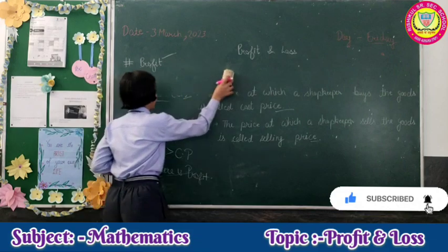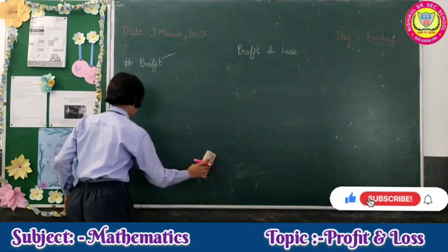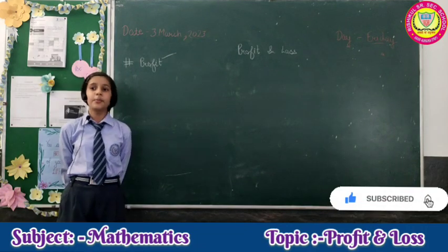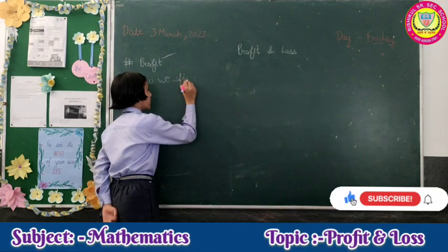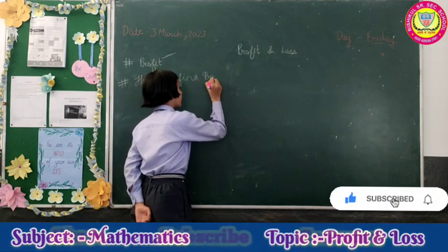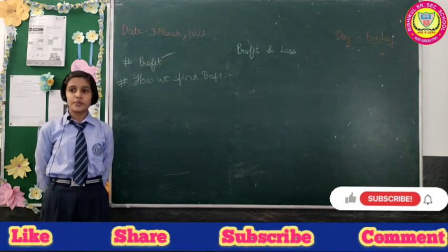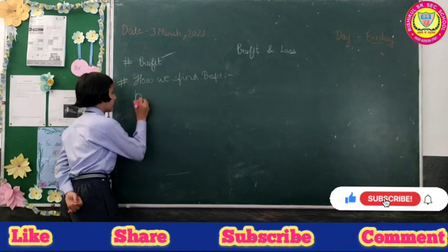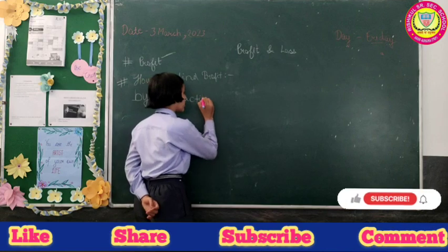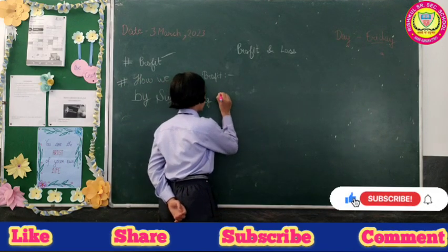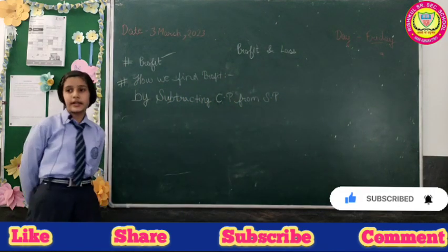Now we learn how we find the Profit. We find Profit by subtracting Cost Price (CP) from Selling Price (SP).